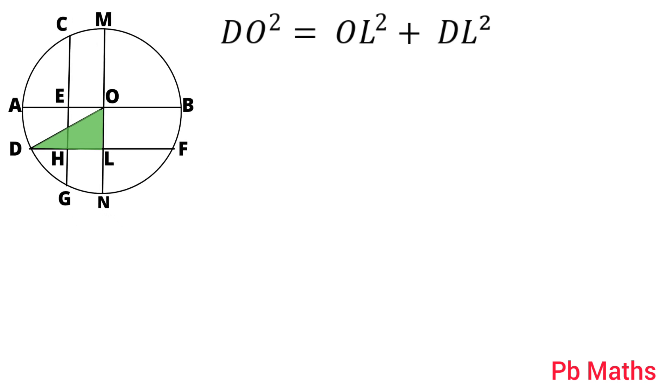The length of DO is 1.5 or 3/2. So, (3/2)² equals the length of OL is (1/2)² plus DL, which can be written as DH plus HL. So, the length of HL equals 1/2 cm.